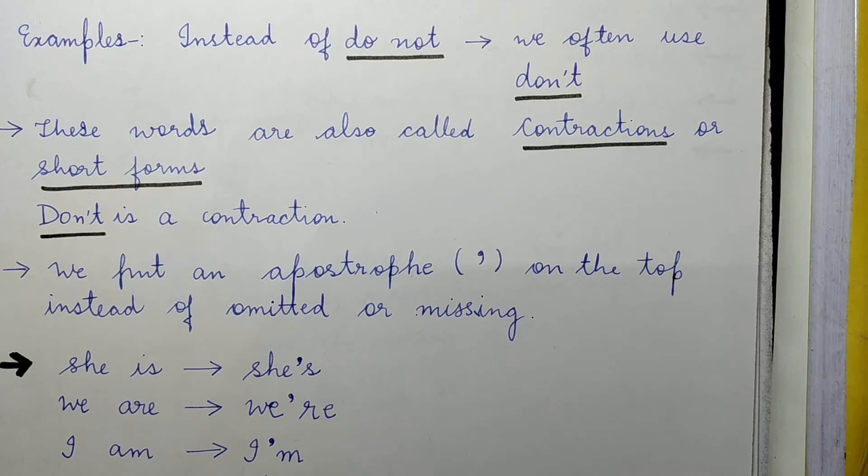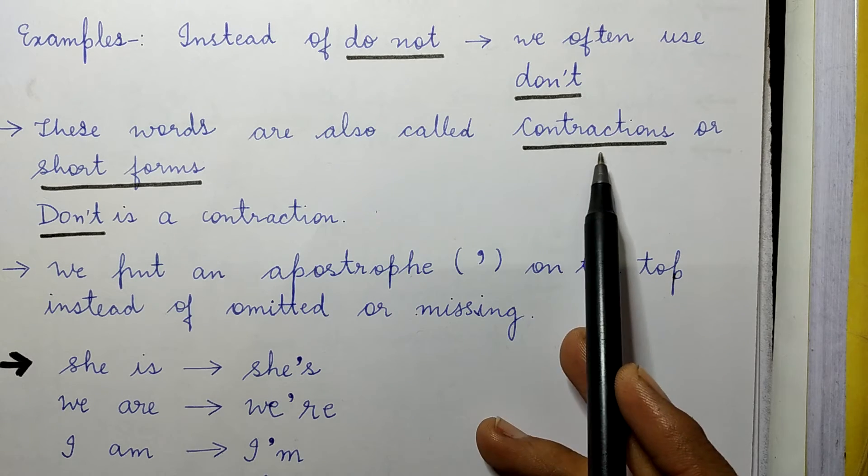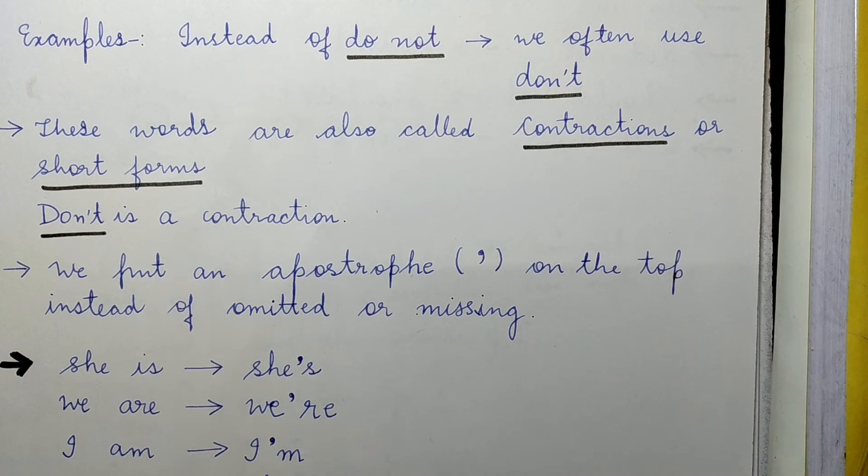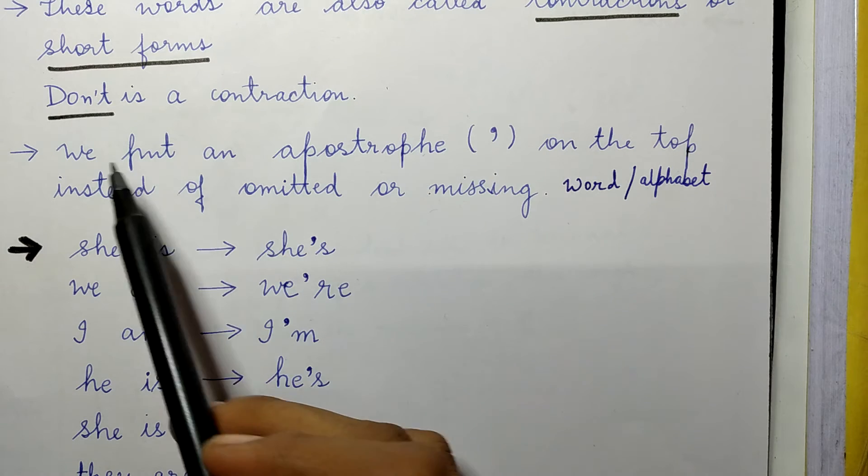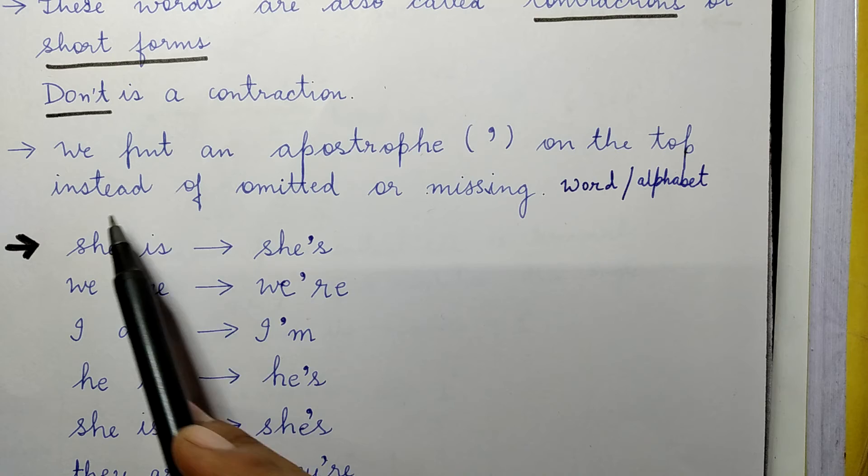These words are also called contractions or short forms. Now don't here is a contraction or it's a short form. You can observe that we have put an apostrophe on the top instead of the omitted or the missing alphabet.